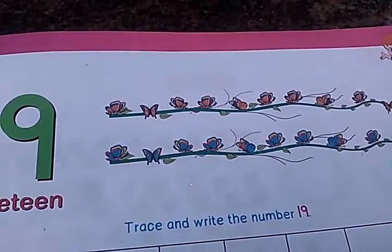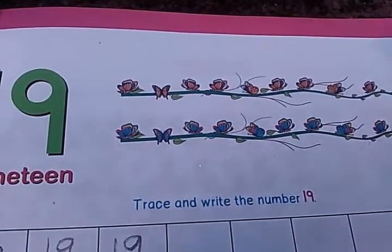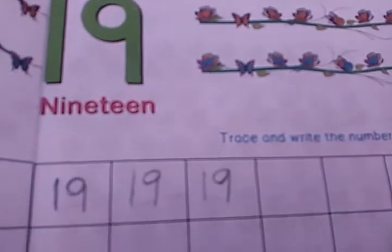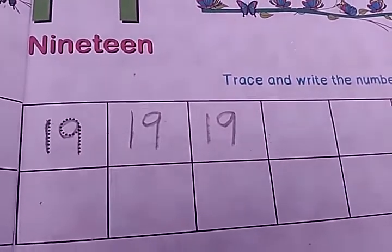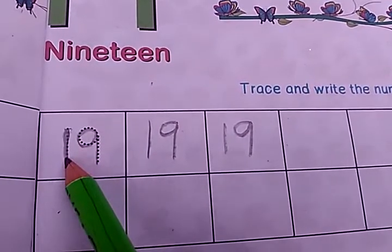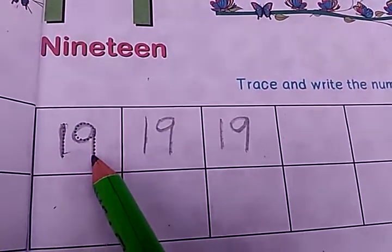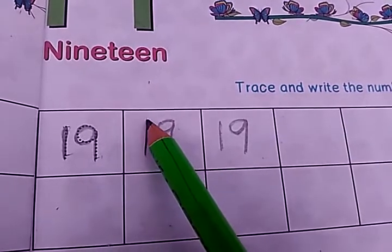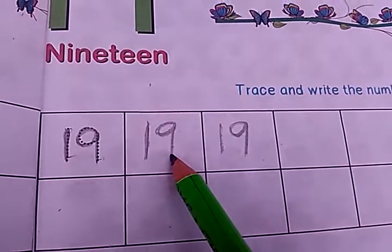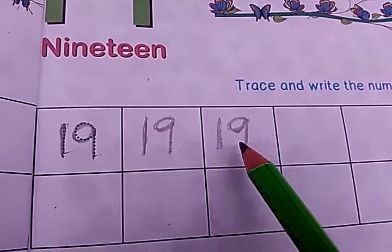Students, now we write 19. Shall we write number 19? First, we write number 1. This is a straight line. Then here we write 9. This is 19. First we write 1, then we write 9. This is 19.